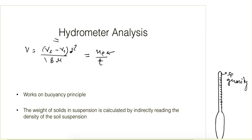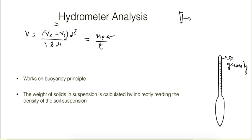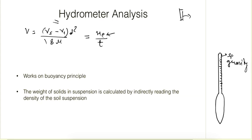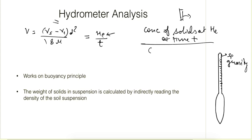Another difference between the pipette method and the hydrometer method is that in the pipette method we were drawing out samples at different time intervals using a pipette, but in the hydrometer method we don't need to draw out any sample. We can calculate the specific gravity of the solids using the hydrometer, and from there we establish a relationship to find the concentration of solids at He and at time t. Dividing by the concentration at t = 0 gives the percentage finer than d.